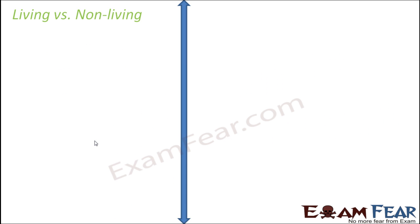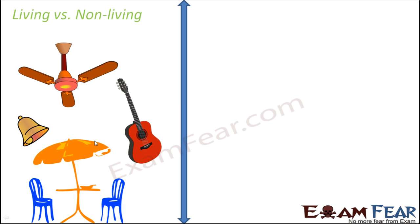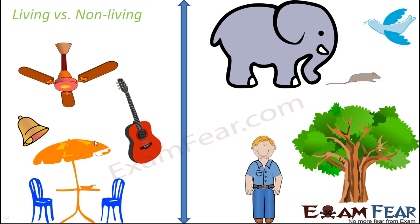Let us look at certain objects around us which are living and certain other objects which are non-living. Very easily you will be able to distinguish between the two. Things like chairs, tables, umbrella, fan, the electric bell or the guitar — these are all non-living. Whereas organisms like an elephant, a mouse, a bird, a tree, or a human being — these are living.